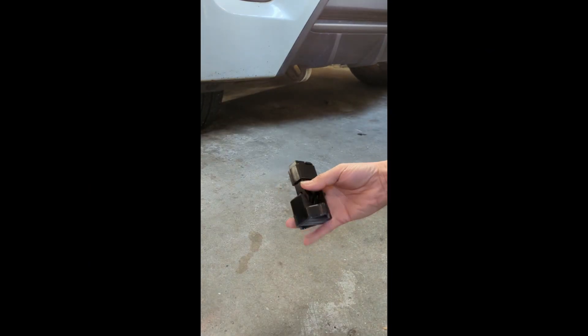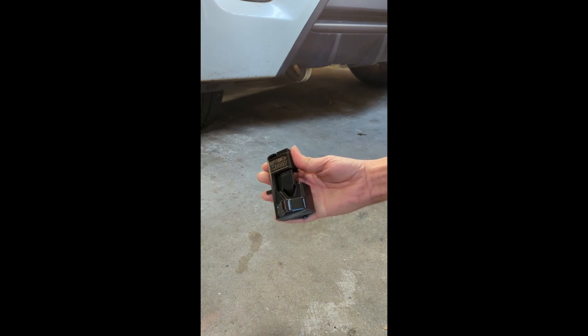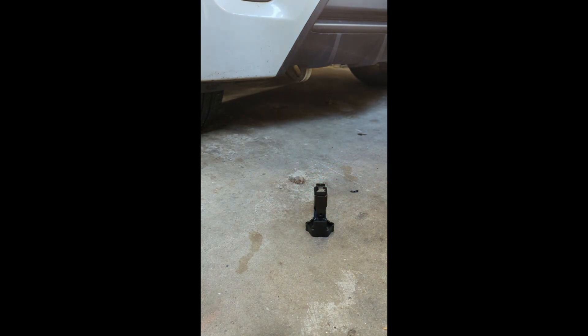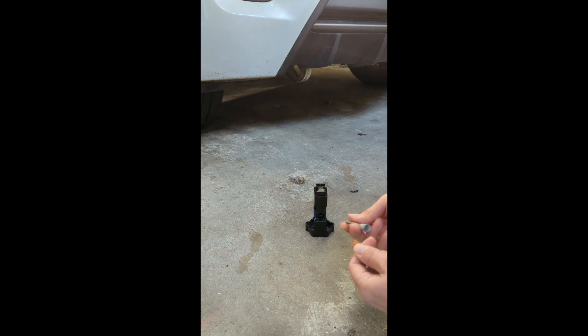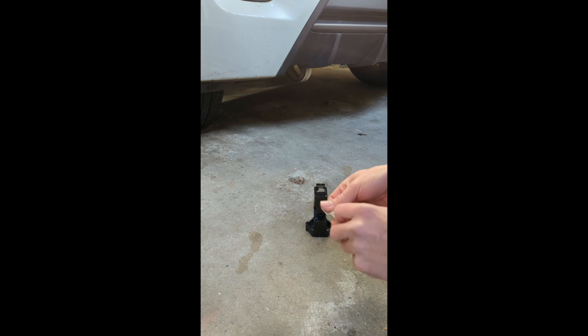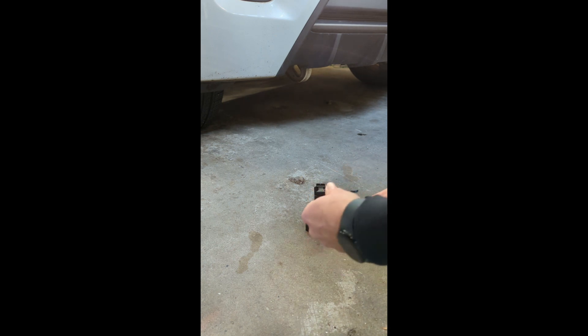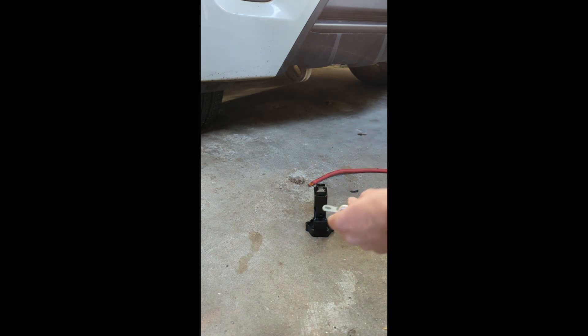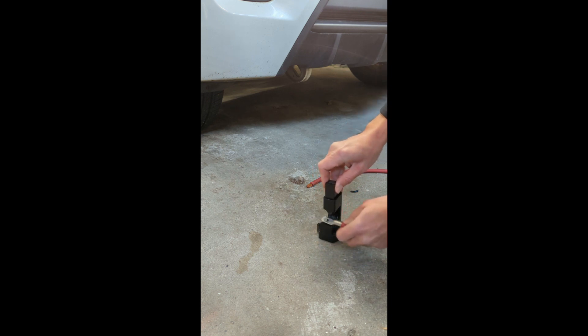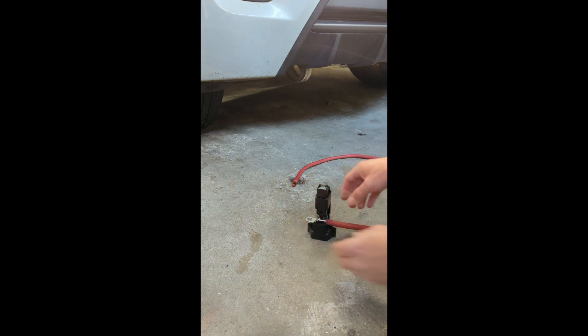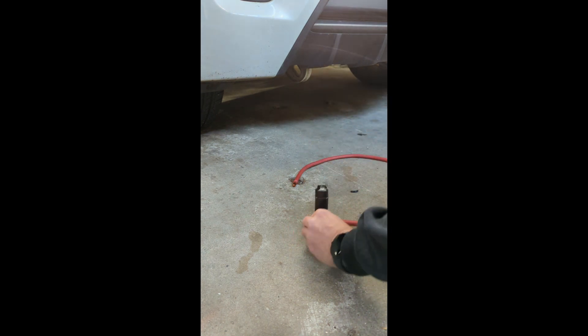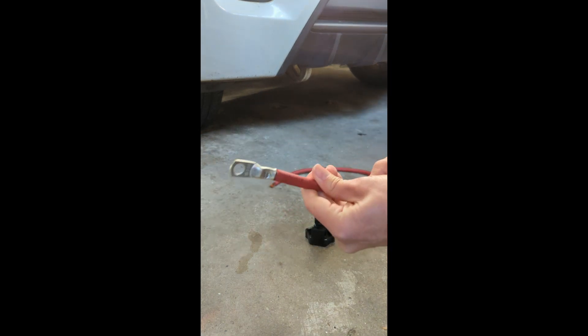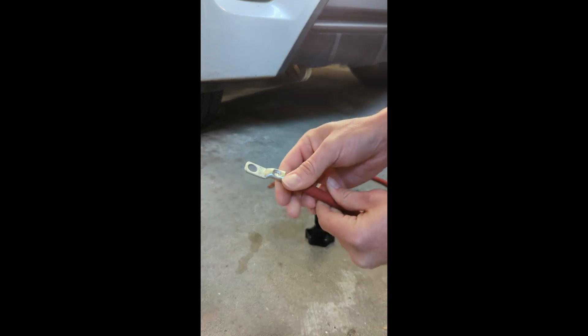To crimp the wires we're just going to use this simple crimping tool that you use with a hammer. We'll put our lugs on. This makes a nice crimped connection for our lugs.